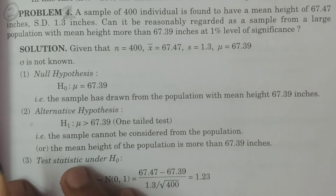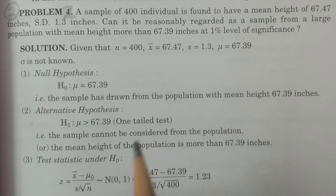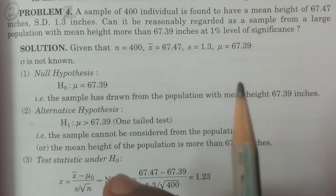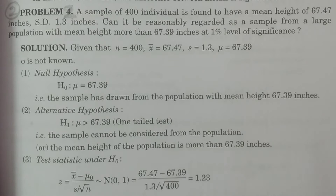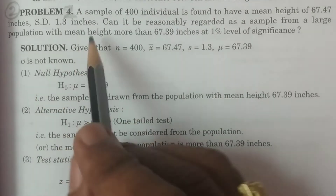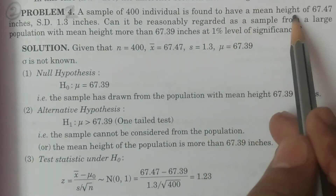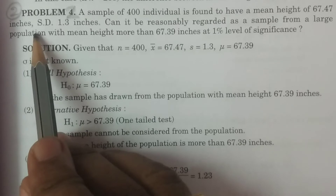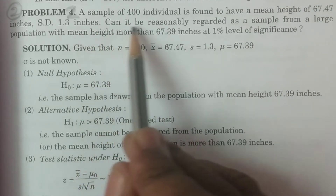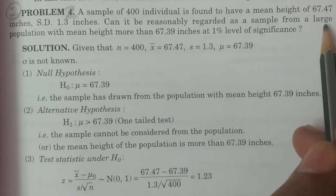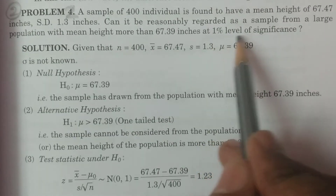Let us consider Problem 2. I suggest you read the problem 2-3 times, then only you can easily understand the problem and do it easily. A sample of 400 individuals is found to have a mean height of 67.47 inches, standard deviation 1.3 inches. Can it be reasonably regarded as a sample from a large population with mean height more than 67.39 inches at 1% level of significance?